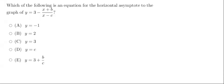Hey guys, welcome back. We are now working through question number 40. So the question says, which of the following is an equation for the horizontal asymptote to the graph of y equals 3 minus x plus b over x minus b?